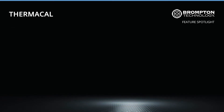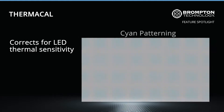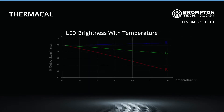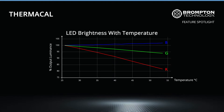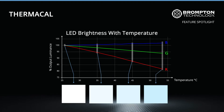The ThermaCal feature helps address the problem of LED thermal sensitivity, known for causing visual artefacts such as cyan patterning, which often occurs when LED panels are set to display white backgrounds for extended periods of time. These visual artefacts happen because the red LEDs are much more sensitive to thermal effects than green and blue ones. As LED panels become hotter during operation, a greater amount of red LED brightness is lost in the warmer areas of the screen, making it appear more blue.